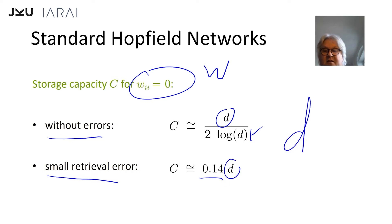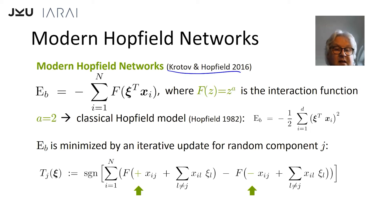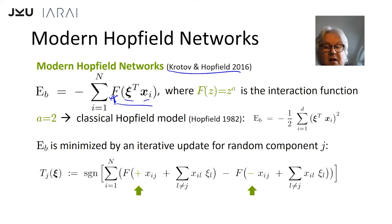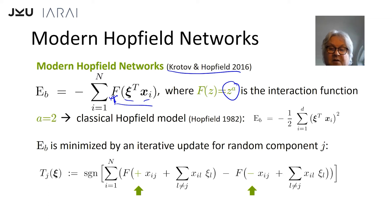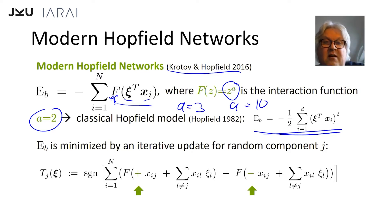This changes with modern Hopfield networks. Modern Hopfield networks as introduced by Krotov and Hopfield in 2016: in the energy function we have some function f. In the classical Hopfield network it was the dot product squared; now it's f of the dot product, again the dot product between the state pattern and a stored pattern. This f can be a polynomial function — for a equals two we get back the classical Hopfield network, but we can also use a equals three or a equals ten and then we get a different dynamic.